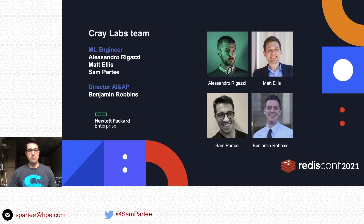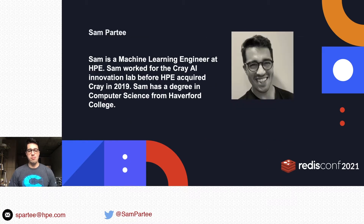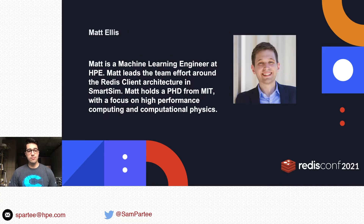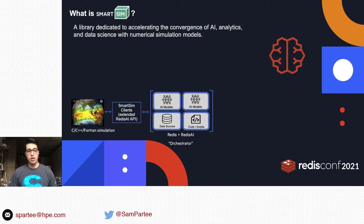I'm a machine learning engineer for HPE. Previously I worked for the Cray AI Innovation Lab — HPE acquired Cray in 2019 — and I have a degree in computer science from Haverford College. Matt Ellis is also a machine learning engineer at HPE. Matt led our team effort around the Redis and Redis AI client architecture within SmartSim, and he has a PhD from MIT with a focus on HPC and computational physics.